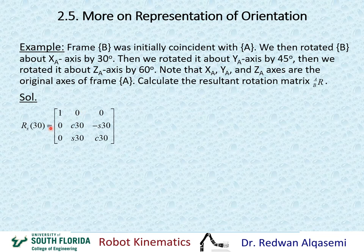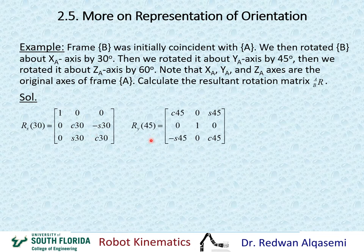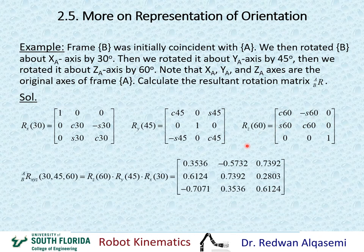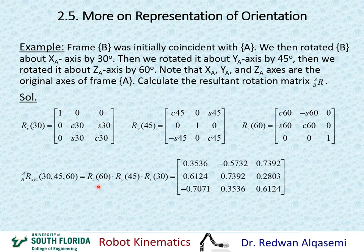The rotation about x is 30°, y is 45°, z is 60°. Since we use fixed angles, the rotation matrices must be multiplied in the opposite sequence to the rotation order. Rotation sequence is x, y, z — so we multiply Rz(60°) first, then Ry(45°), then Rx(30°). Substituting the standard rotation matrices for each axis and multiplying them together gives the resultant rotation matrix R_{B/A}.